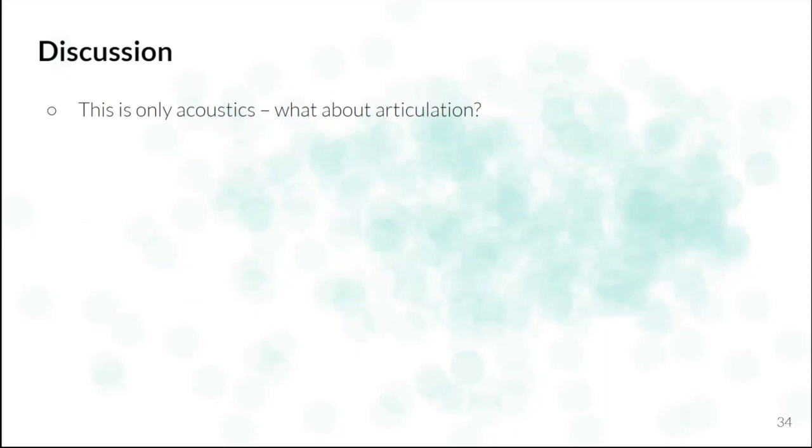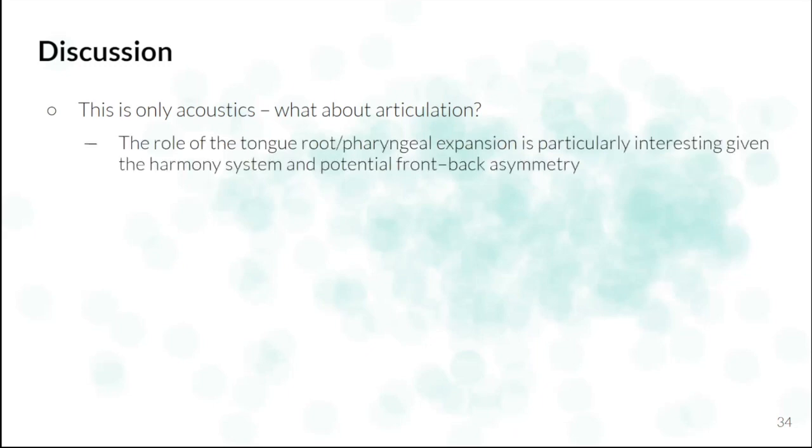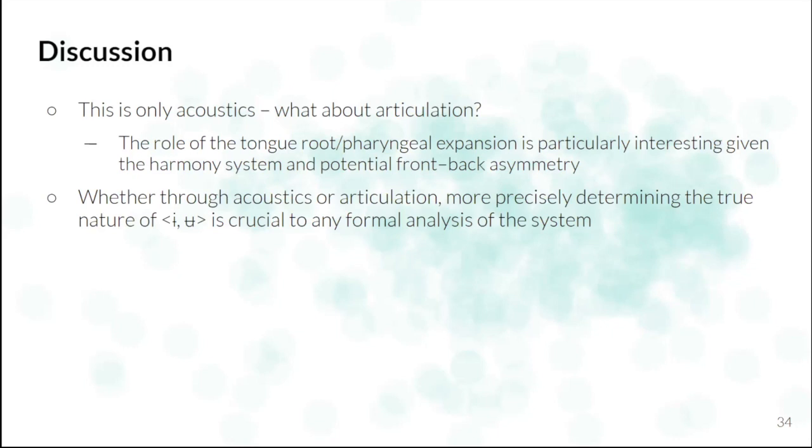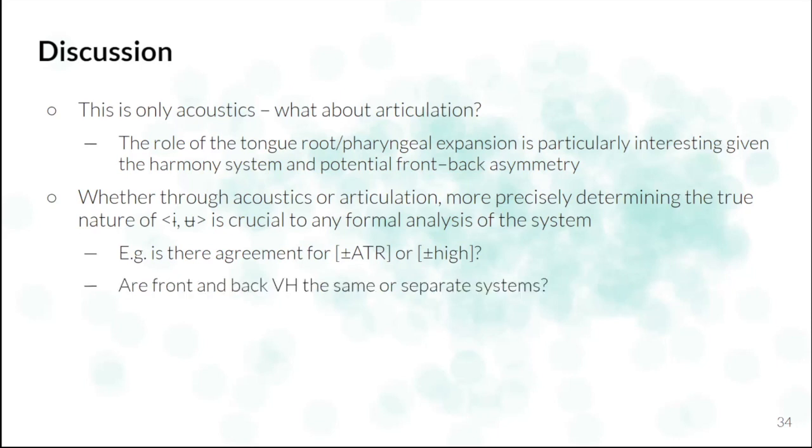And then, obviously, another thing to say, caveats out of the way, is thinking more in the broader perspective, this is only acoustic data. And, in fact, what I talked about here is mainly only F1, really. And so what's going on with articulation? So the role of tongue root and pharyngeal expansion is particularly interesting in the system, given the way in which the lowering occurs. But also this potential front-back asymmetry, not only within the alternations, but also, perhaps, given my impressionistic judgment on the realizations of the degree 2 vowels, regardless of harmony. Now, whether or not this is through acoustics or articulation, more precisely determining the true nature of what these degree 2 vowels actually are, is then going to be crucial to informing any formal analysis of this system.